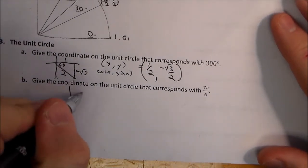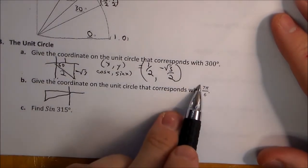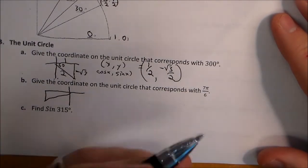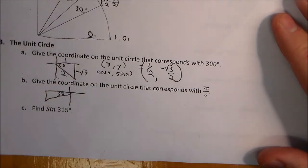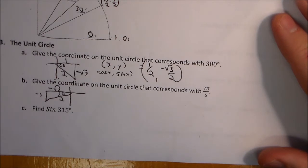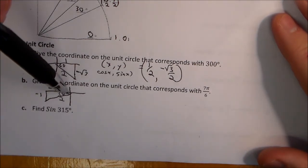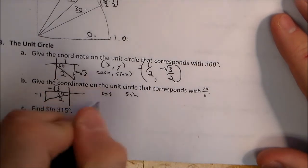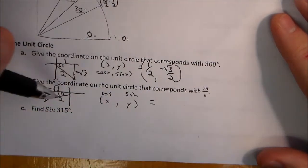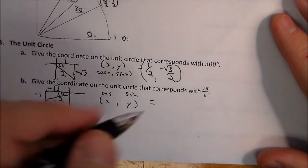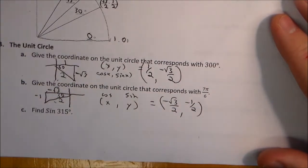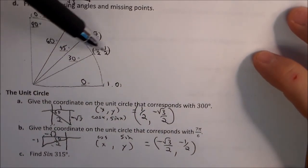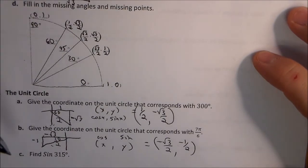For 7π over 6, this is in quadrant three because it's 1 seventh of π past π (since 6π/6 = π). With the 6 in the denominator, we know that's a 30 degree reference angle, giving sides 1, root 3, and 2 — but both root 3 and 1 are negative in quadrant three. So cosine is negative root 3 over 2, and sine is negative one-half.